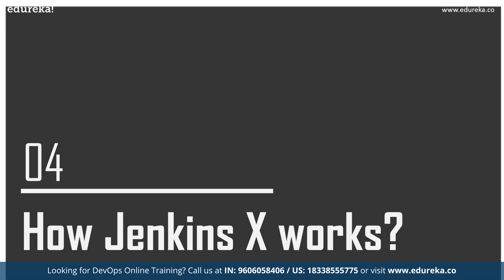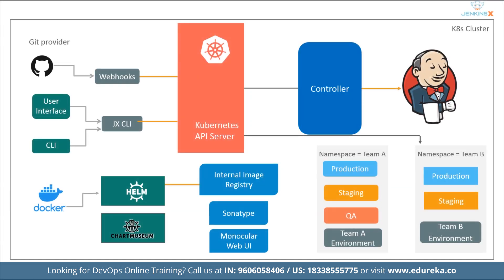Now let us talk about how Jenkins X works. As you can see the diagram on the screen, this is the overall architecture of Jenkins X. The developer commits and pushes changes to the project's Git repository. Jenkins X is notified and runs the project's pipeline in a Docker image, which includes the project's language and supporting frameworks. The project pipeline builds, tests, and pushes the project's Helm chart to Chart Museum and its Docker image to the registry. Next, the pipeline creates a PR with the changes needed to add the project to the staging environment. Jenkins X automatically merges the PR to master, runs the staging pipeline, which runs Helm to deploy the environment — pulling Helm charts from Chart Museum and Docker images from the Docker registry. Kubernetes then creates the project's resources: typically a pod, service, and ingress.